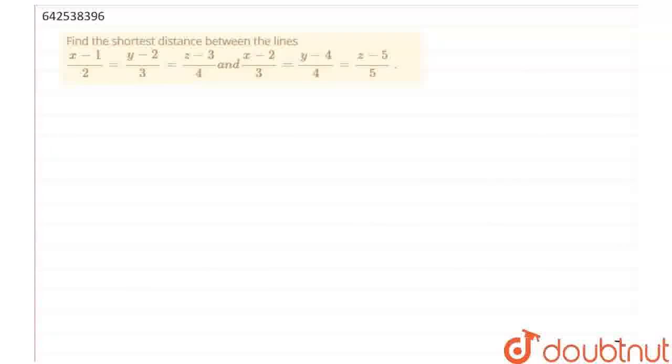We know the formula for finding the distance which is equal to mod of b1 vector cross b2 vector dot of a2 vector minus a1 vector upon b1 vector cross b2 vectors whole mod.